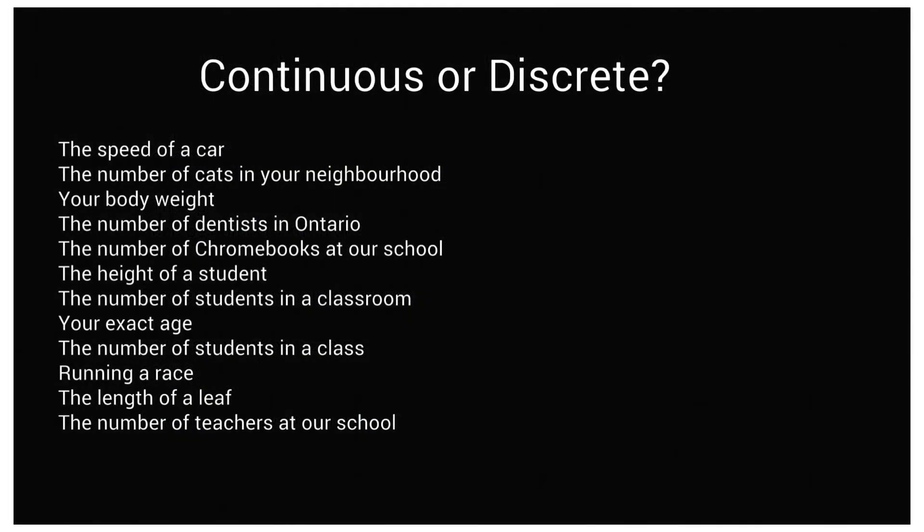So let's look at continuous or discrete. The speed of a car, as we said, it is continuous. The number of cats in your neighborhood, well, that would be discrete because you can actually count them and you have like 1, 2, 3, 4, 5, 6, 7. You cannot have anything different. Your body weight can be measured, so it is continuous because it changes.